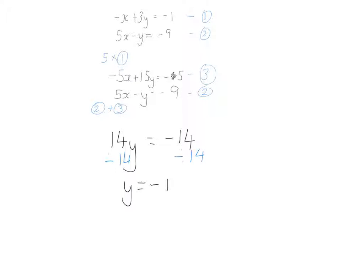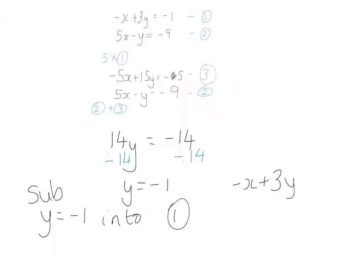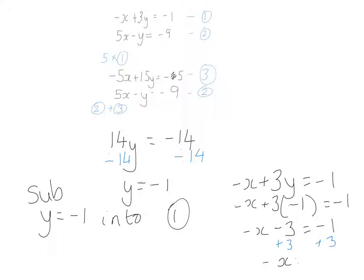Now I substitute y equals minus 1 into equation one: minus x plus 3y equals minus 1. So that's minus x plus 3 times minus 1 equals minus 1, which gives minus x minus 3 equals minus 1. Adding 3 to both sides gives minus x equals 2. Dividing both sides by minus 1 gives x equals minus 2.